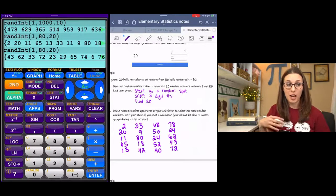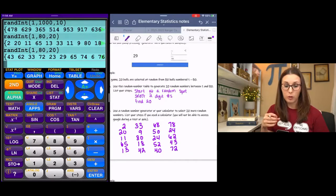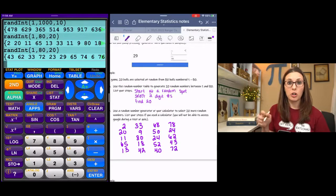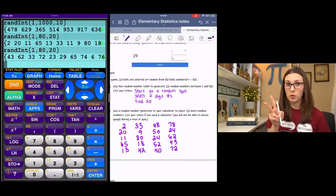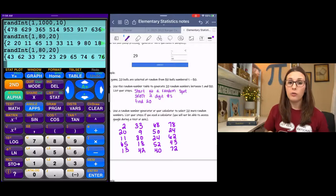All right, for the sake of time, I skipped the table. But if you were to do the table, you would start, close your eyes, start randomly, and you would circle two-digit numbers because the highest number is 80. And then you would find 20 numbers in between 1 and 80.